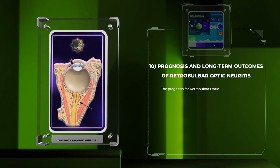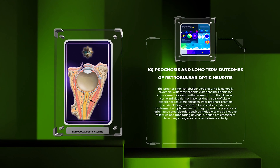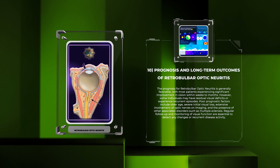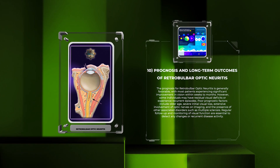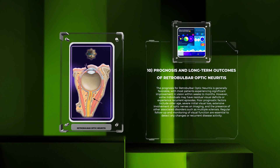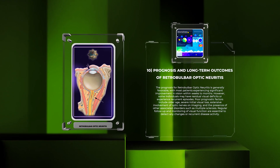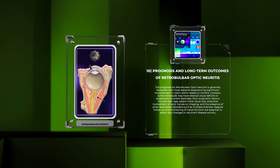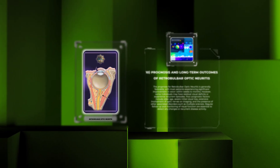The prognosis for retrobulbar optic neuritis is generally favorable, with most patients experiencing significant improvement in vision within weeks to months. However, some individuals may have residual visual deficits or experience recurrent episodes. Poor prognostic factors include older age, severe initial visual loss, extensive involvement of optic nerves on imaging, and the presence of other associated disorders such as multiple sclerosis. Regular follow-up and monitoring of visual function are essential to detect any changes or recurrent disease activity.